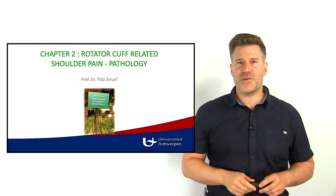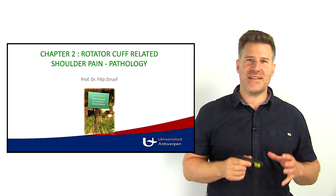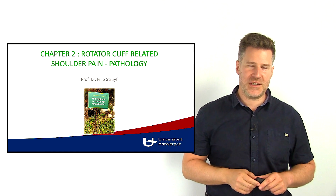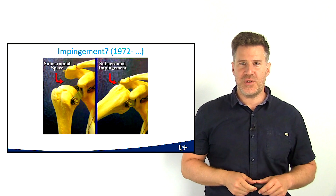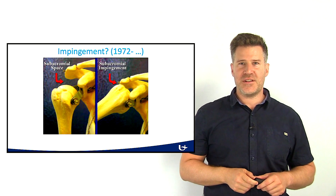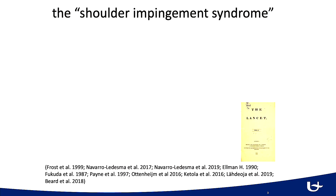In this section I will go through some of the evidence on the role of the subacromial space and how this steers a lot of our treatment strategies. Around 1972, the orthopedic surgeon Neer described the shoulder impingement mechanism as compression of the soft tissues in between the coracoacromial arc and the humeral head. This is a very well-known and widespread mechanism. This slide summarizes the current evidence on the impingement syndrome.